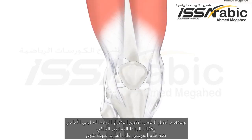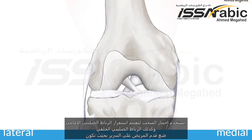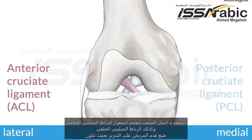The drawer test is used to assess the stability of the anterior cruciate ligament, or ACL, as well as the posterior cruciate ligament, or PCL.